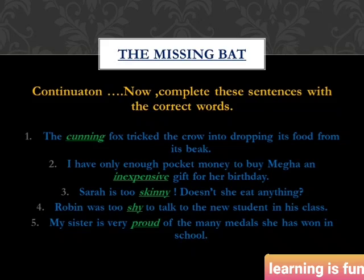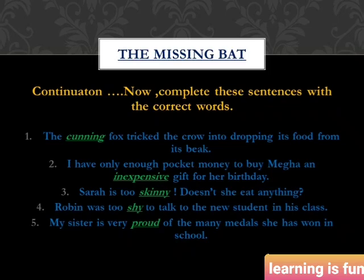There is another exercise on page 6 where you fill in positive or negative words as per the sentence. The first sentence: 'The ______ fox tricked the crow into dropping its food from its beak' — the answer is 'cunning,' not 'clever,' because the fox is using intelligence while harming others. The second sentence: 'I have only enough pocket money to buy Mega an ______ gift for her birthday' — the answer is 'inexpensive,' since buying a gift cannot be called cheap.